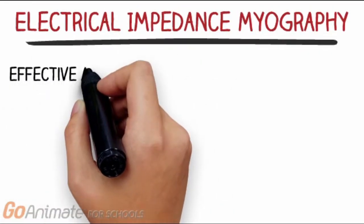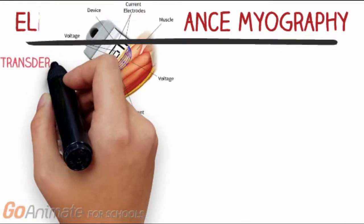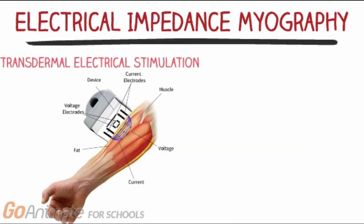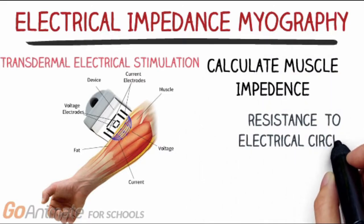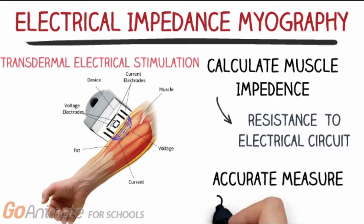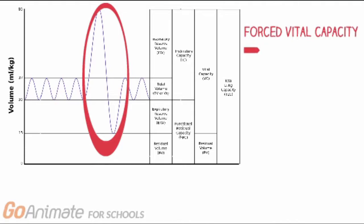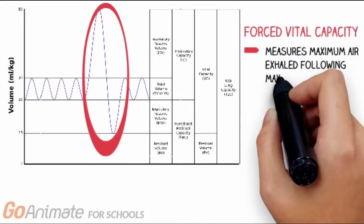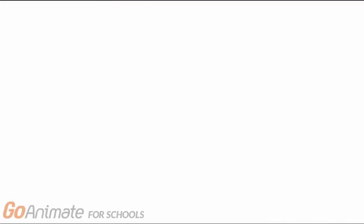Electrical impedance myography is one of the most effective and promising non-invasive techniques. It uses transdermal application of high-frequency and low-intensity electrical stimulation to calculate muscle impedance — or resistance to electrical circuit — which is an accurate measure of muscle health. Forced vital capacity measures the maximum amount of air a person can breathe out after a maximum inhalation, evaluating the muscles involved in breathing.